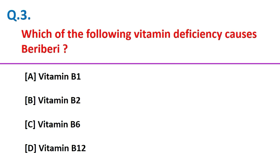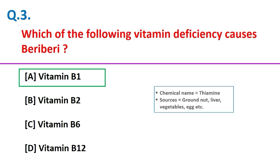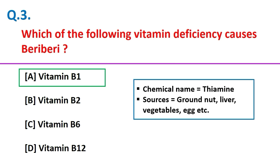Which of the following vitamin deficiencies causes beriberi? Vitamin B1. Friends, the chemical name of vitamin B1 is thiamine, and good sources are groundnut, liver, vegetables, egg, etc.